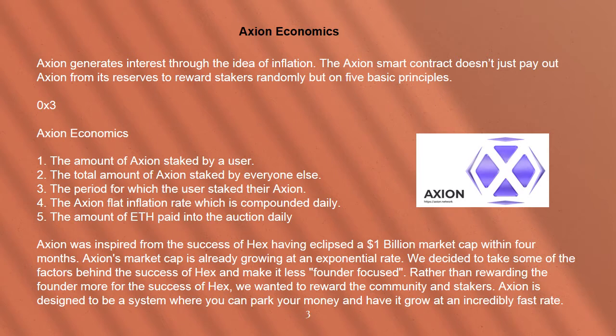1. The amount of Axion staked by a user. 2. The total amount of Axion staked by everyone else. 3. The period for which the user staked their Axion. 4. The Axion flat inflation rate, which is compounded daily. 5. The amount of ETH paid into the auction daily.